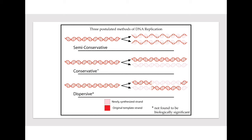Semi-conservative replication means that because DNA is double-stranded, one strand will serve as the template — known as the parent strand — and then you'll have the growing strand, which is the complement to it and brand new. So semi-conservative means half old or half parent, and then half new. Research has confirmed that it is the semi-conservative style of replication.